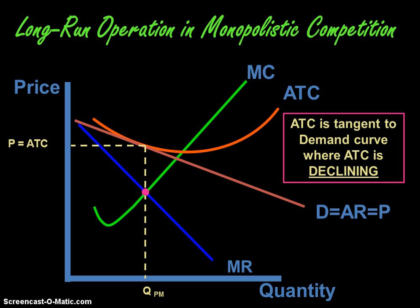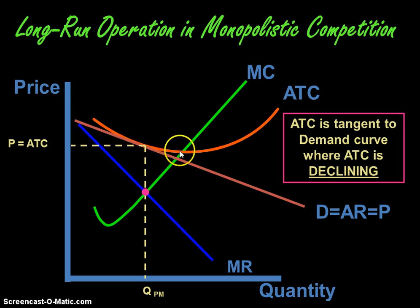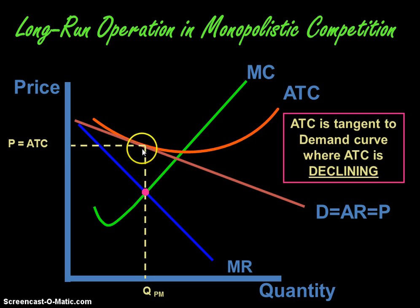Some things to note, if you ever have to draw this: average total cost is tangent to the demand curve where average total cost is declining — in the downward-sloping portion of average total cost. It's not the lowest part of average total cost, because that's where marginal cost intersects it. It's just tangent to the demand curve at this point, which means that the firms are breaking even, because average total cost equals price or average revenue.